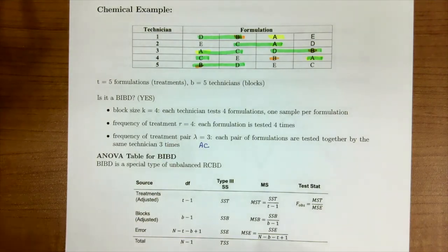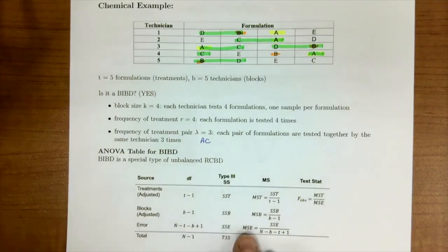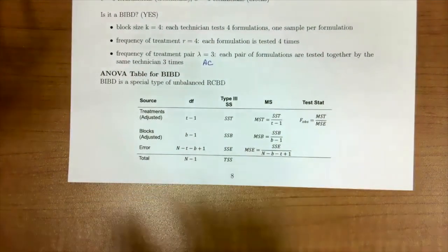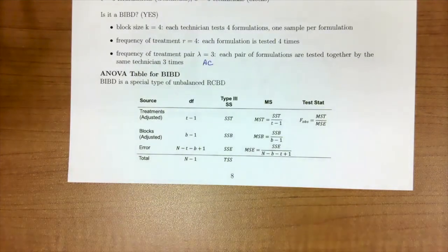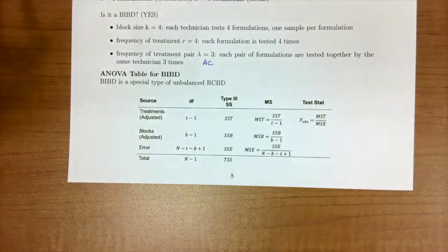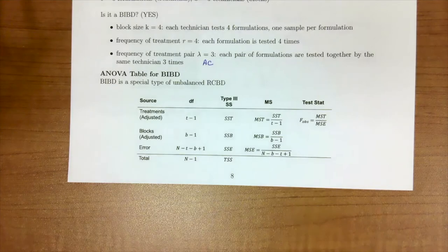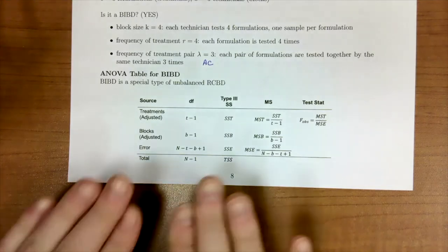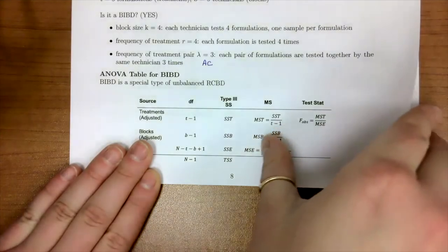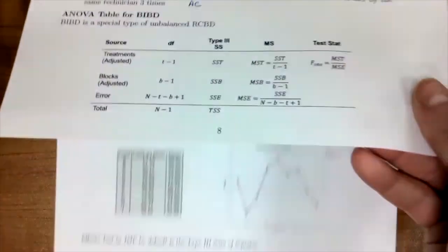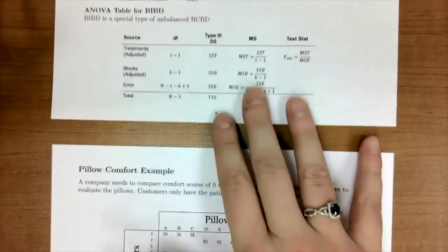The ANOVA table for a balanced incomplete block design looks exactly like what we talked about in our last lesson's notes. And the reason why is because a BIBD is a special type of unbalanced RCBD. So again, this ANOVA table should look very familiar to what you just saw in lesson 6a.